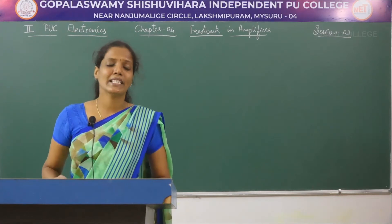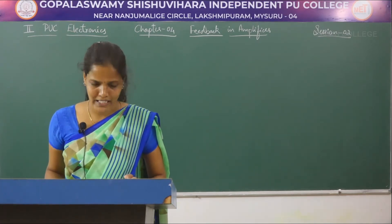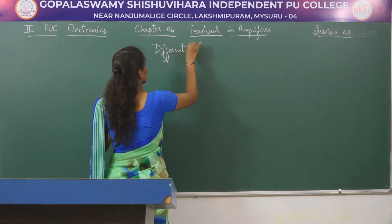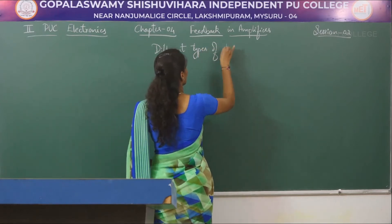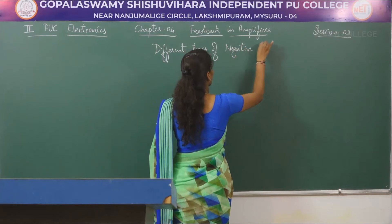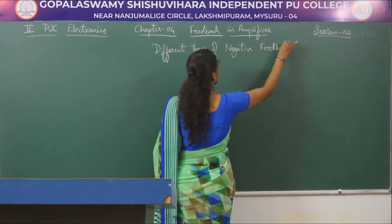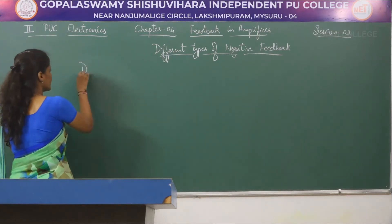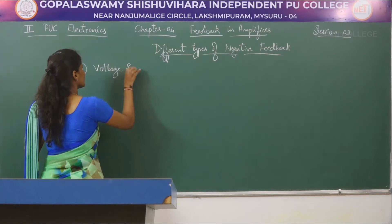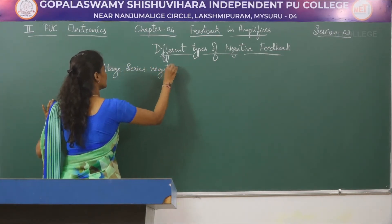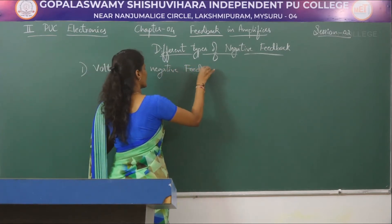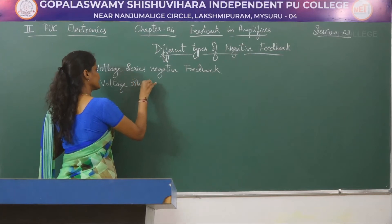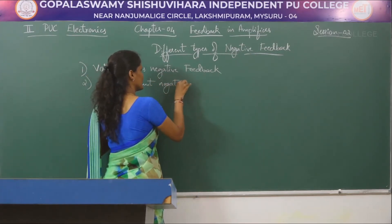In today's session we will be seeing the four different types of negative feedback network. There are four different types of negative feedback: the first one is voltage series negative feedback, and the second one is voltage shunt negative feedback.